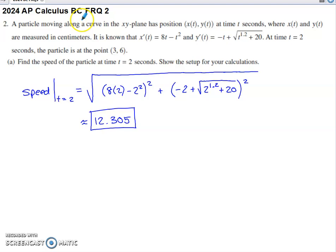So they tell us we've got a particle moving along a curve in the xy-plane. It's got its position given by x(t), y(t), time measured in seconds. X and Y are measured in centimeters. They don't give us x(t) and y(t). They give us x'(t) and they give us y'(t).